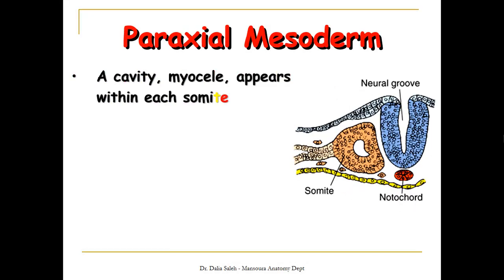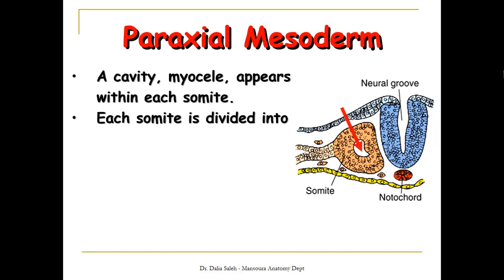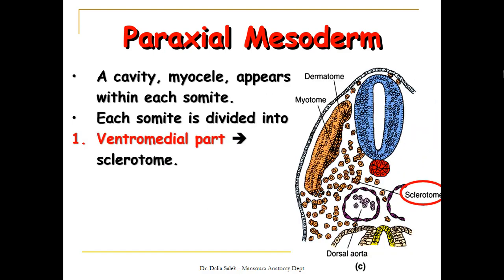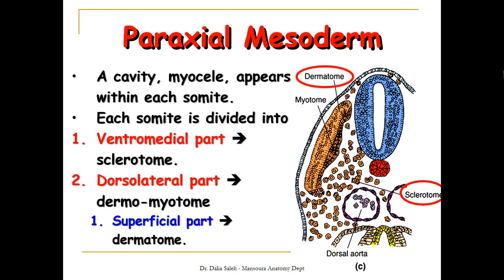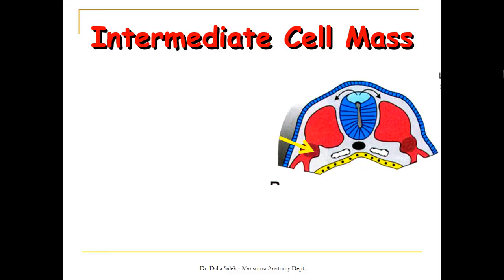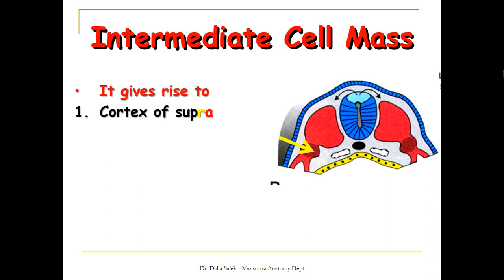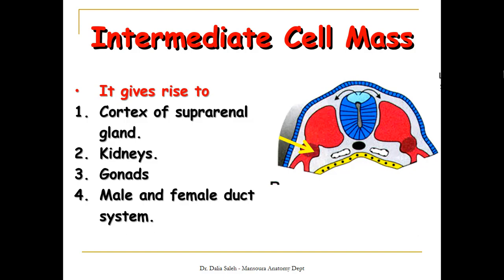The paraxial mesoderm differentiates further. A cavity appears inside the somite called the myocoele. Each somite is divided into two parts: the ventromedial part forms the sclerotome, whose cells will later form the vertebrae and bones of the body axis. The dorsolateral part forms the dermomyotome — the superficial dermatome forms the dermis of the skin, while the deeper myotome forms the muscles. For the intermediate mesoderm, or intermediate cell mass, it gives rise to the cortex of the suprarenal glands, the two kidneys, the gonads, and the male and female duct system — in brief, the genitourinary system.